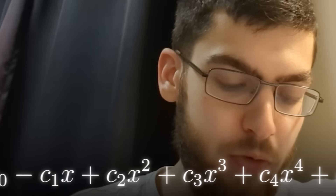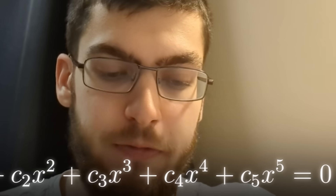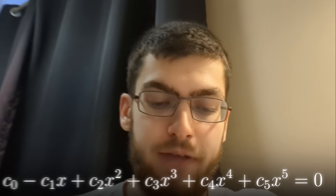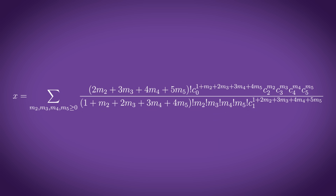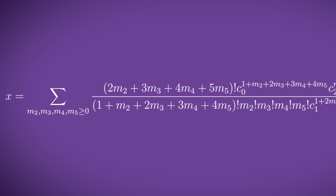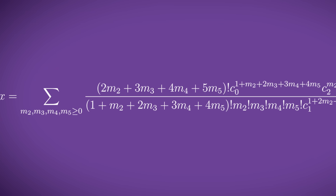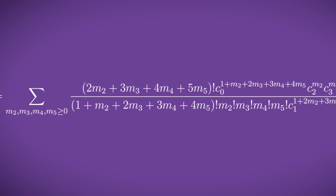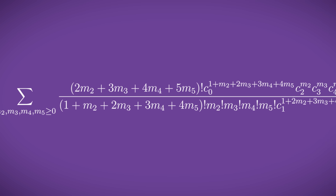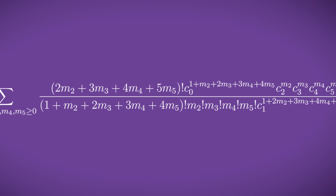It's math. So here's the approximation. We define a quintic equation as c0 minus c1x plus c2x squared plus c3x cubed plus c4x to the 4 plus c5x to the 5 equals 0. And the approximation is the sum from m2, m3, m4, m5 greater than or equal to 0 — meaning all of these just iterate above 0 — of (2m2 plus 3m3 plus 4m4 plus 5m5) all factorials, times c0 to the (1 plus m2 plus 2m2 plus 3m4 plus 4m5), times c2 to the m2, c3 to the m3, c4 to the m4, c5 to the m5.